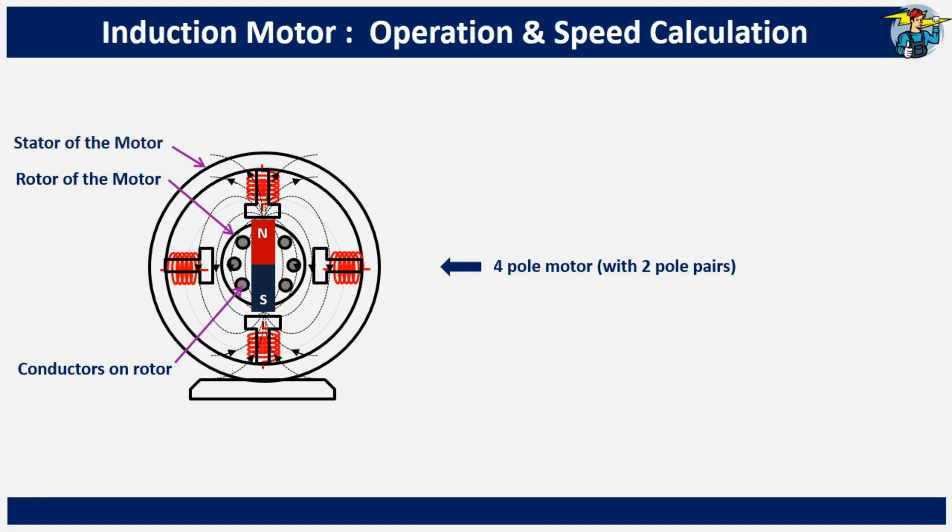When the conductors on the rotor cut the magnetic flux in the rotating magnetic field, current is generated in these conductors. This current produces torque, which acts perpendicular to the conductors on the rotor. As a result, the rotor starts to rotate, following the rotating magnetic field in the same direction.